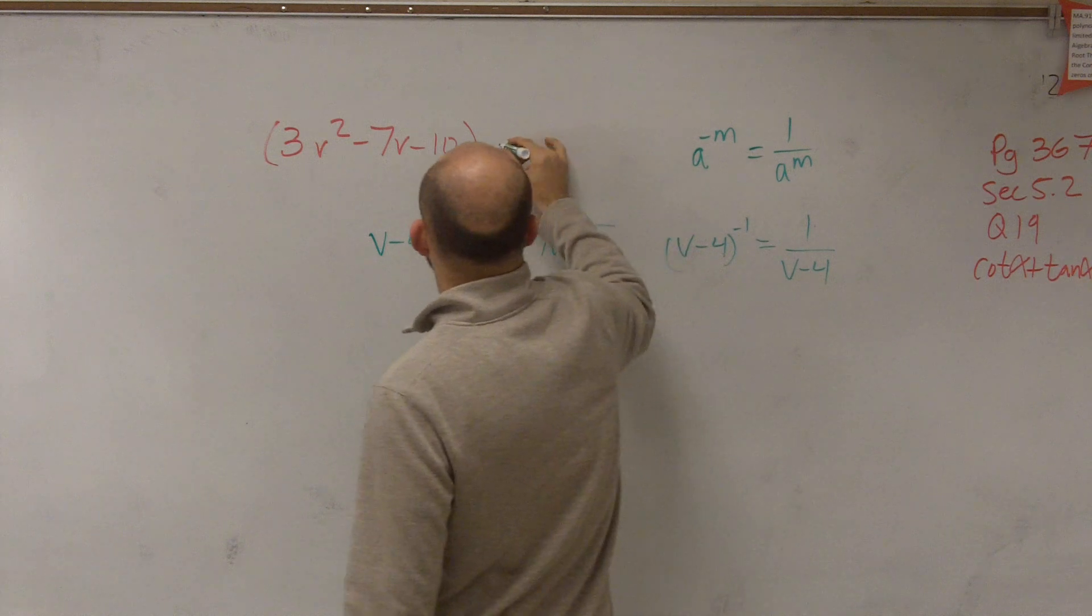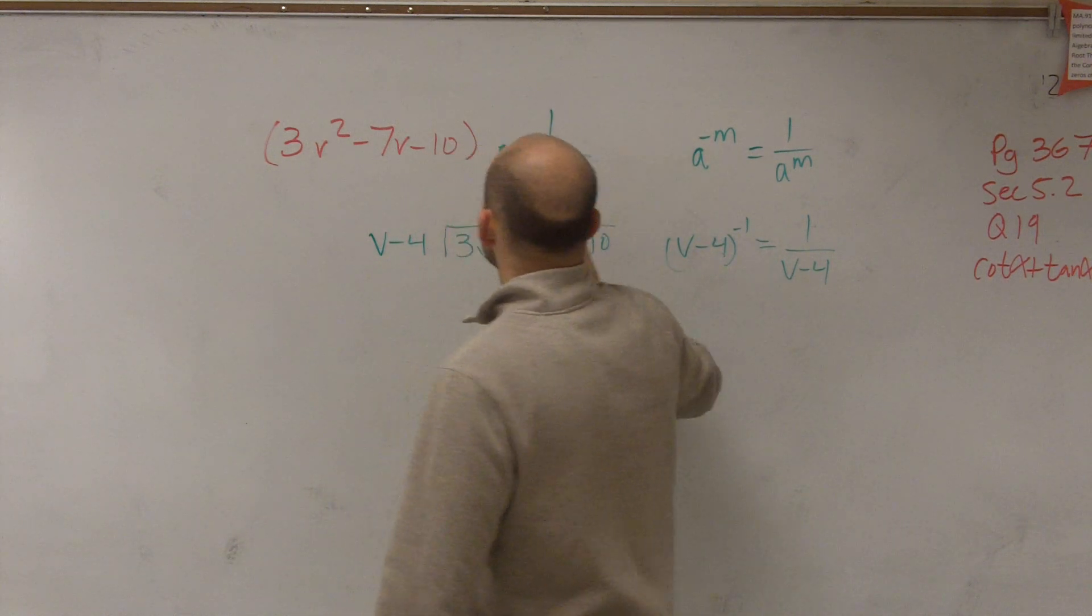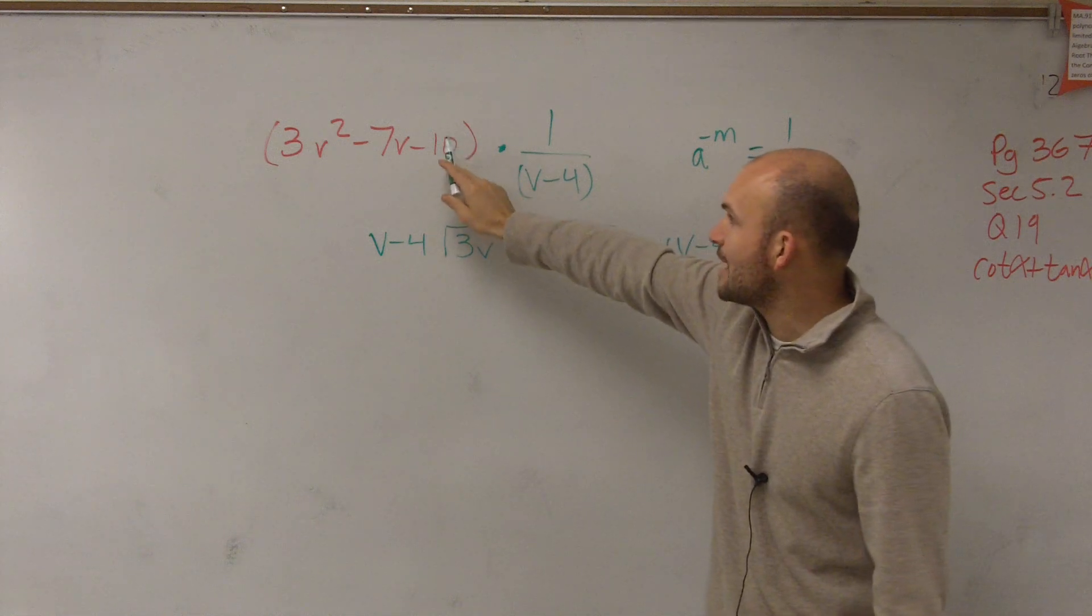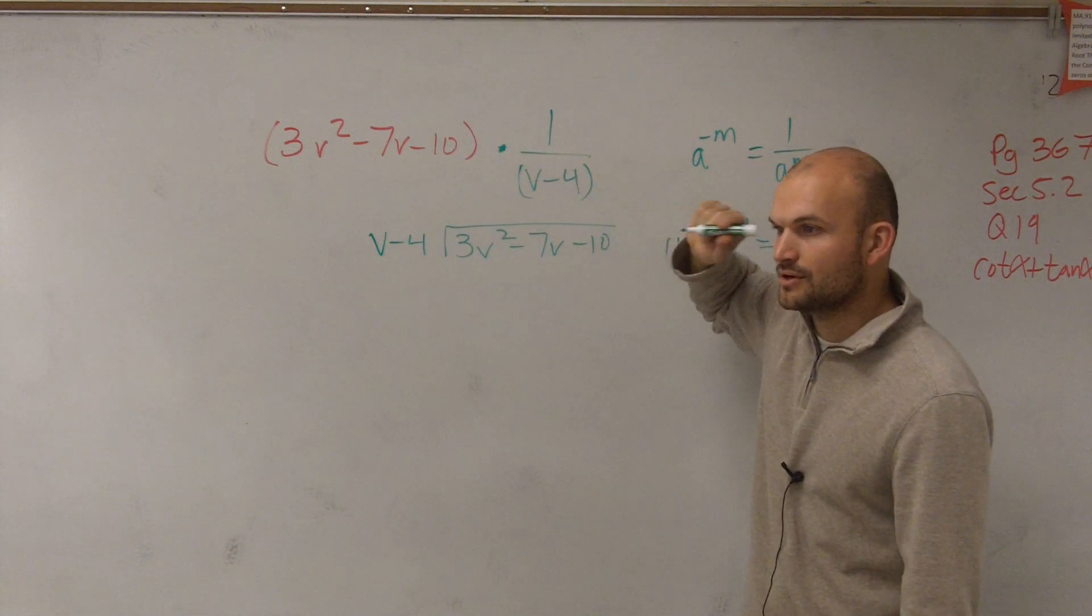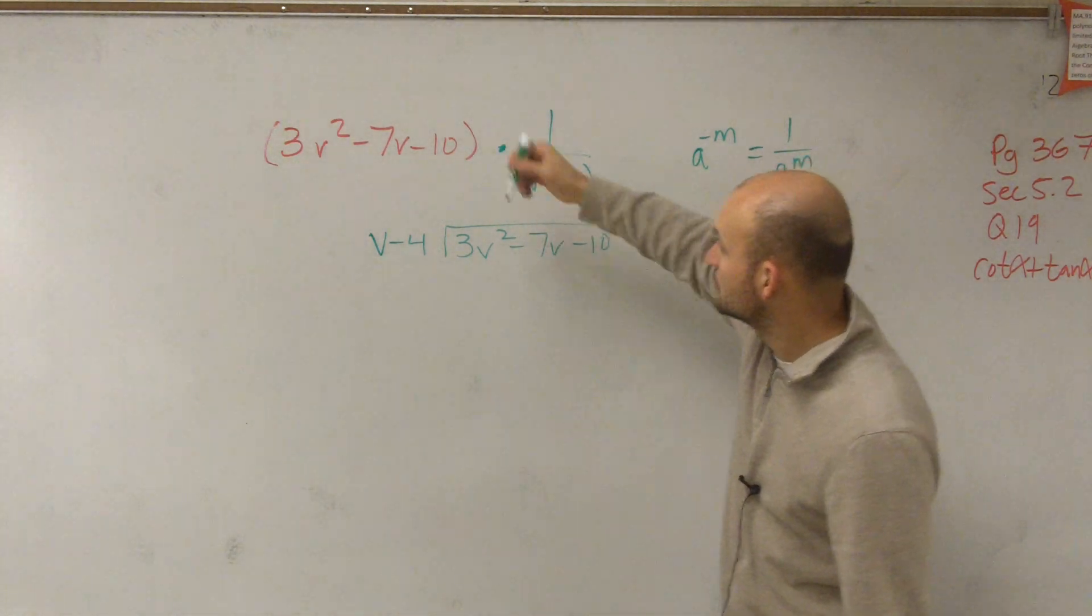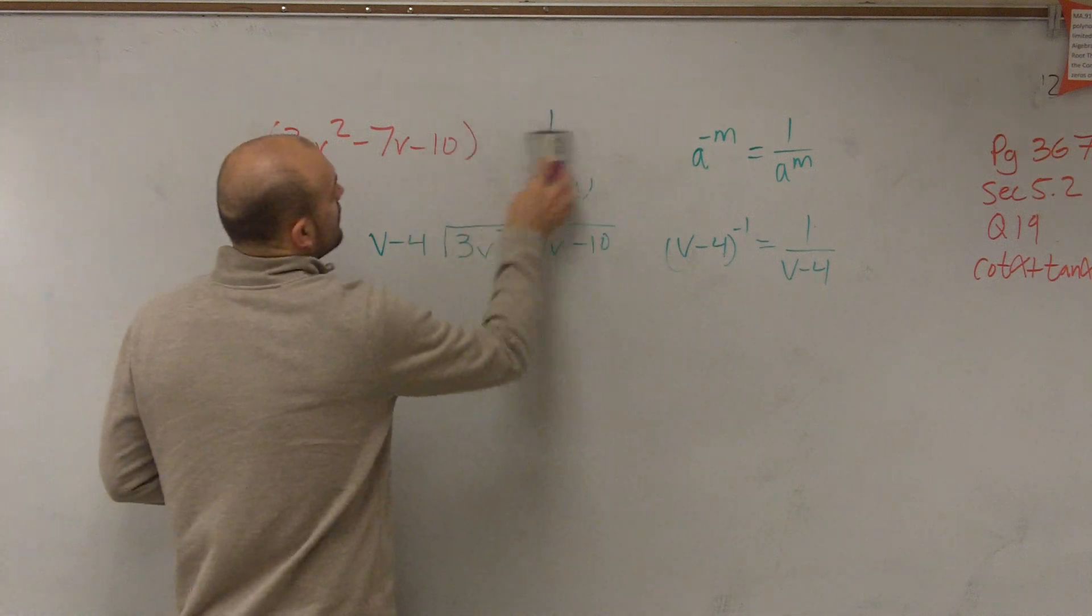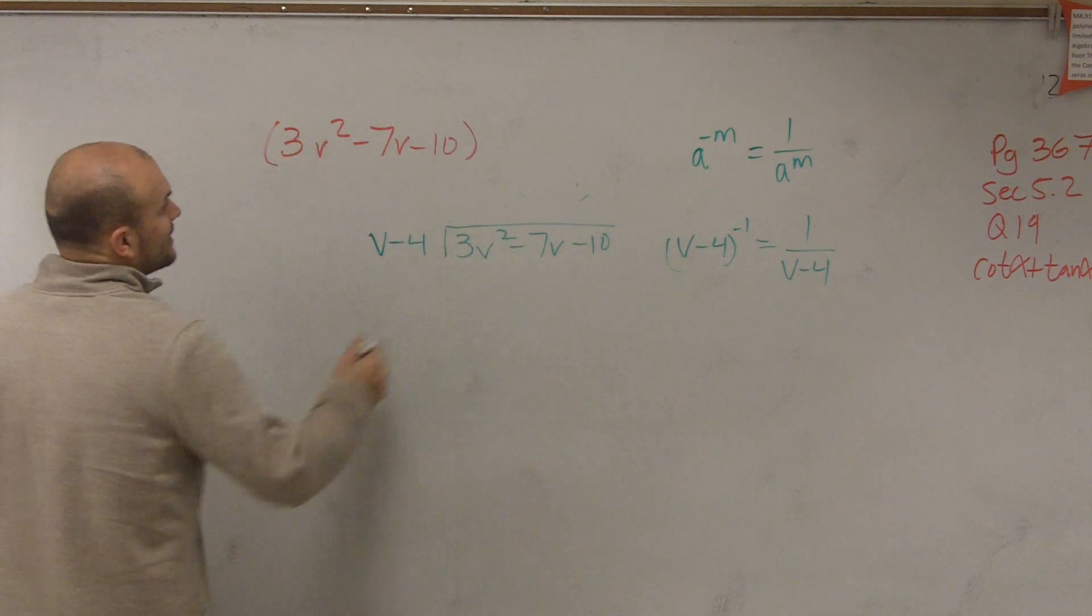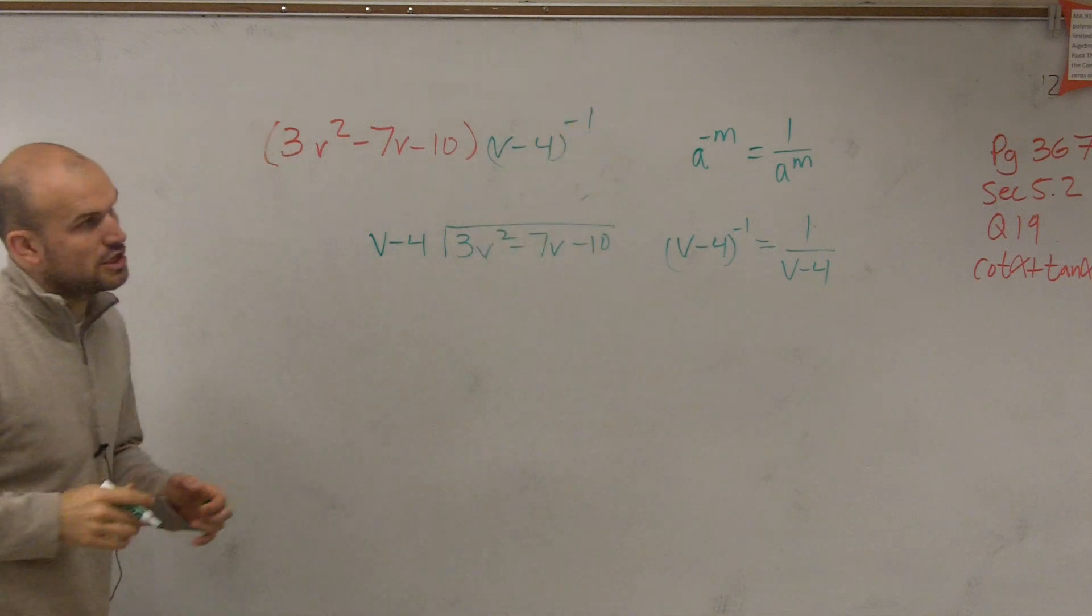So let's rewrite it then. Times 1 over v minus 4. Do you now see how when I multiply, you're going to multiply over, and then you're actually dividing by v minus 4, right? OK. So what I'd like to do now is I'll just keep it written like that so I can do my division algorithm.